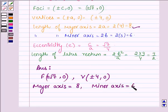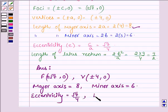is equal to 6. Its eccentricity is equal to root over 7 upon 4 and the length of the latus rectum is equal to 9 upon 2.